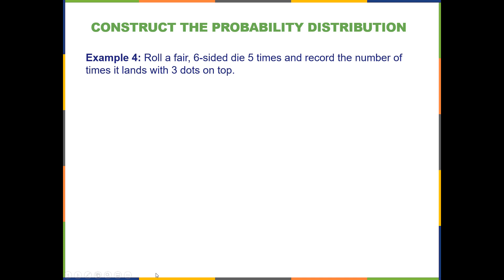All right, so here's an example of a random variable that we saw in a previous lesson. We were trying to determine if it satisfied the requirements of a binomial random variable. This one does because it has a fixed N. We're going to roll the die five times. It also has only two possible outcomes every time we roll the die. We are separating it out to either we get three dots on top or not.